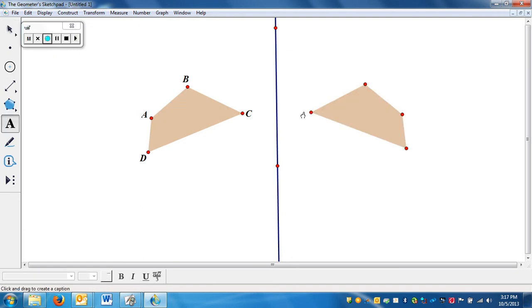If I label these points, Sketchpad knows if I flip points to label them prime, saying this is the second object. Notice if I would measure the distance from C to C prime - actually line to C - notice that's 2.33 and then the measure from C prime to the line.